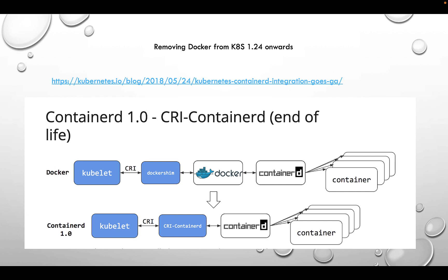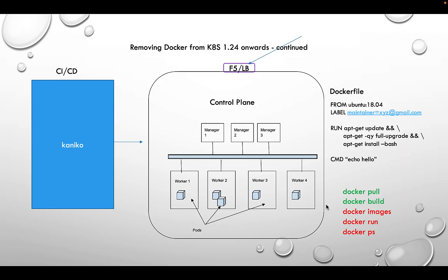In certain scenarios it can affect us — for example, if you are using Docker commands like docker pull to pull images. Normally all of that is done as part of CI/CD. You build a Dockerfile, use docker build to build the image, docker push to push it to an image registry, and then pull it in your deployment.